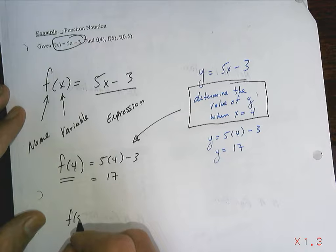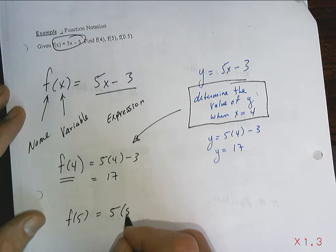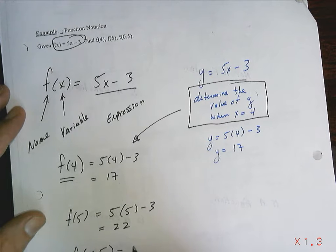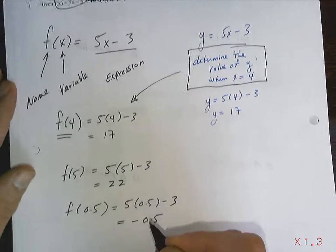So if I was to write this, that simply means instead of substituting in 4, you substitute in 5. And this would simply mean instead of writing in 5 or 4, you're going to sub in 0.5.